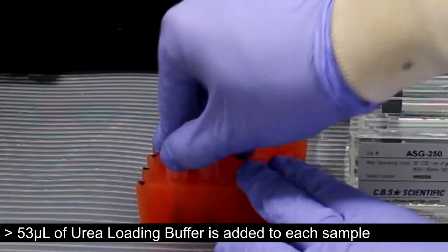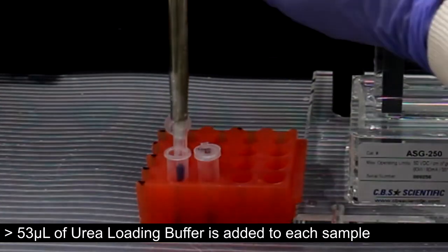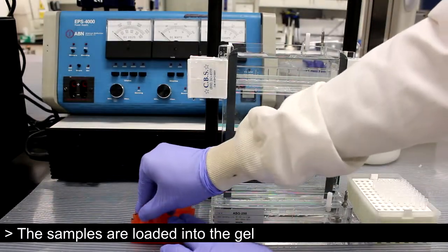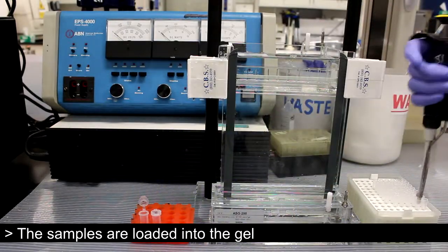53 microliters of urea loading buffer, or a 1 to 1 ratio of buffer to sample, is added to each sample. The samples are then loaded onto the gel.